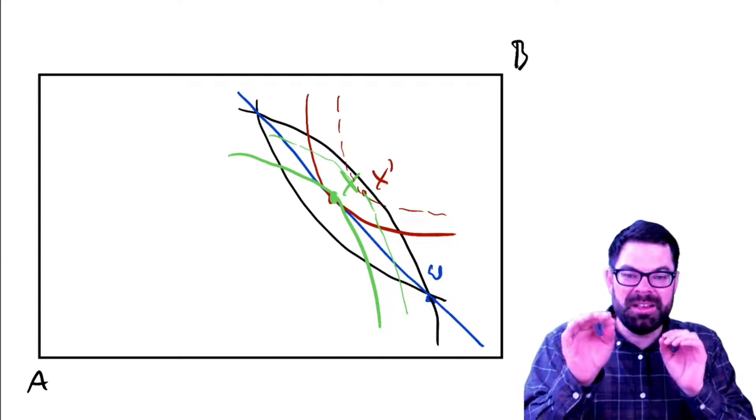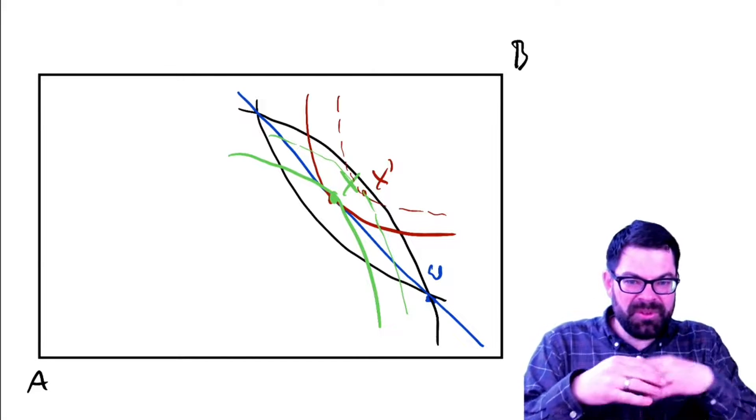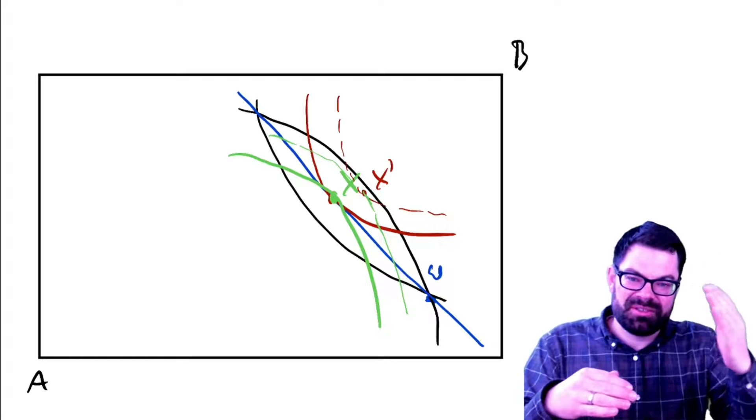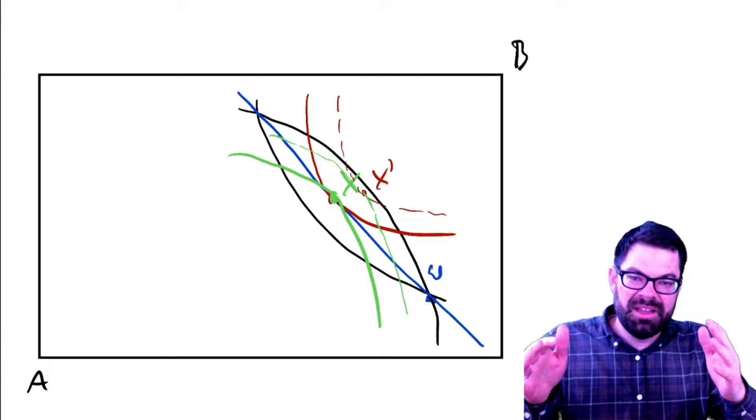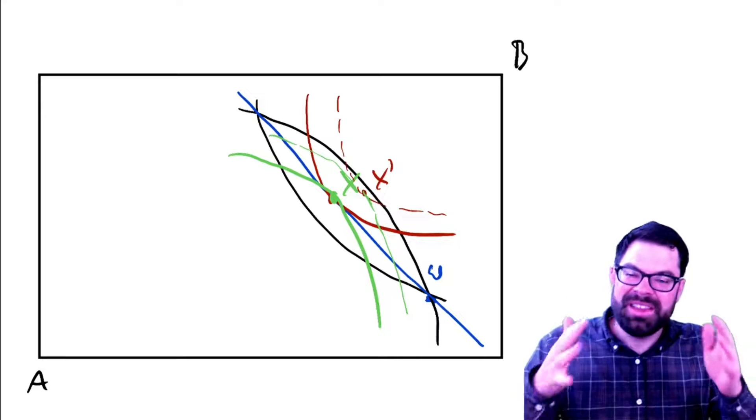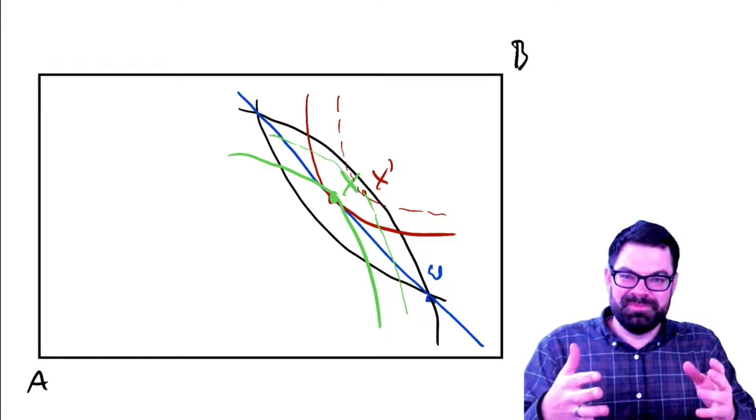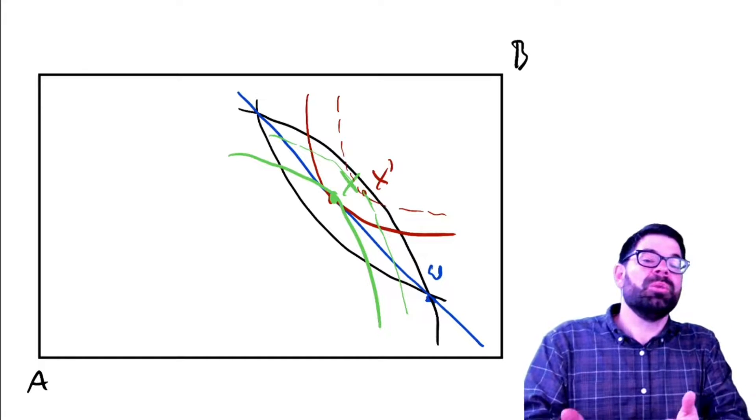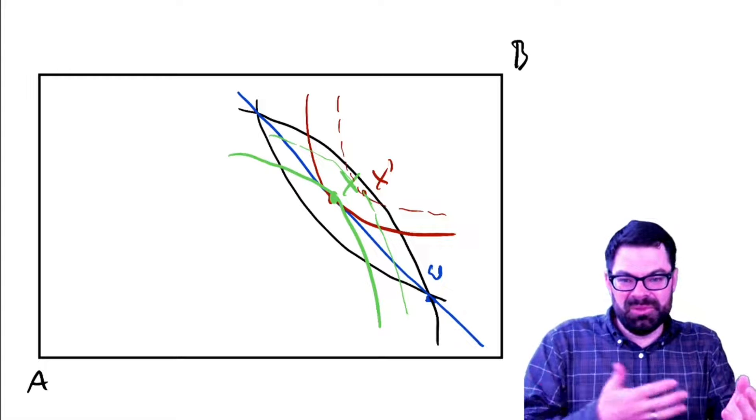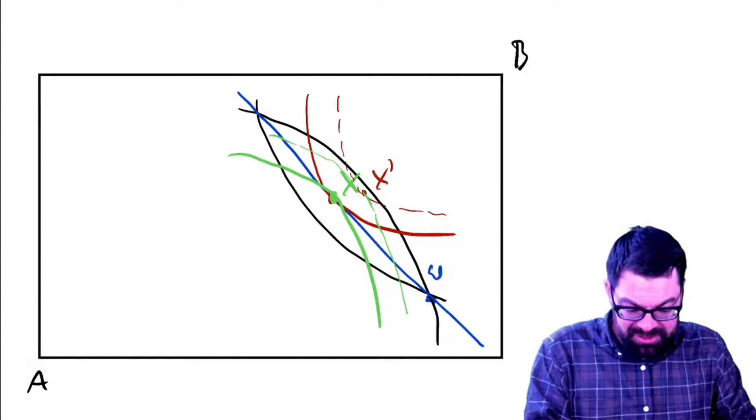But if we are already at point X, then it will be very hard to move to a different consumption point. You wouldn't get people to move there unless you force them to. Why? Well, because you would harm at least one of the two people here.